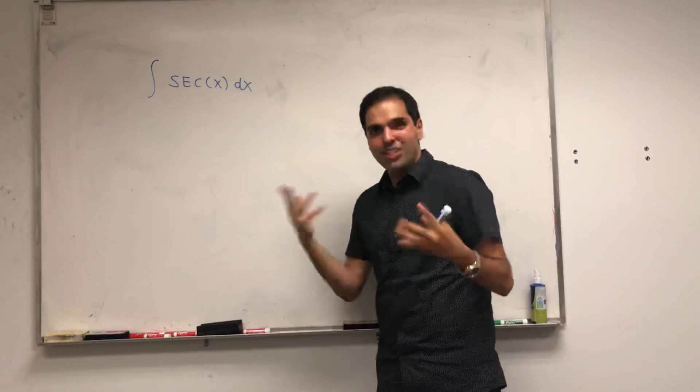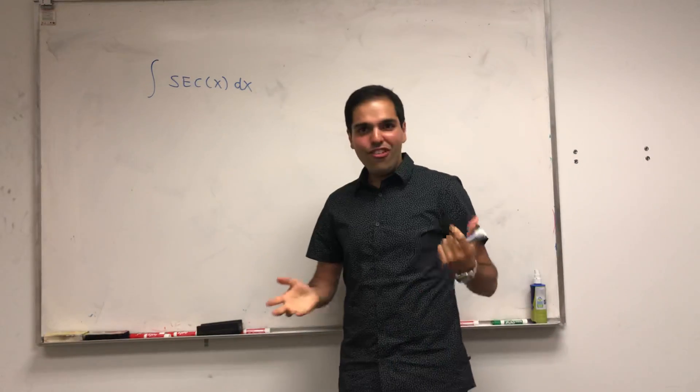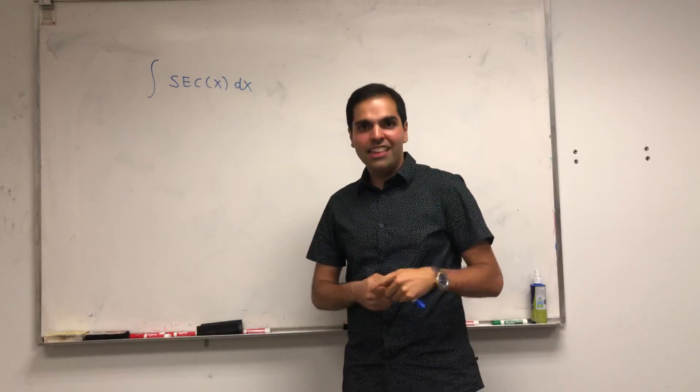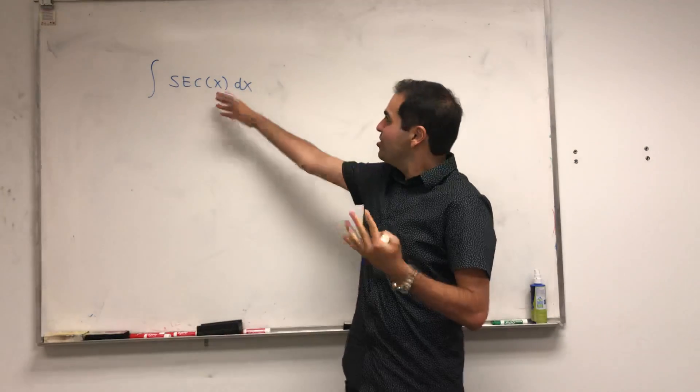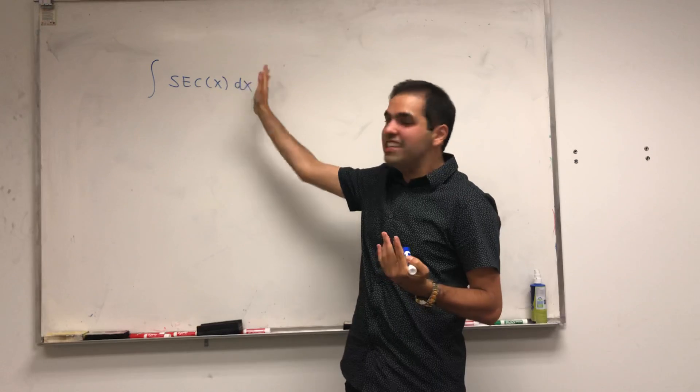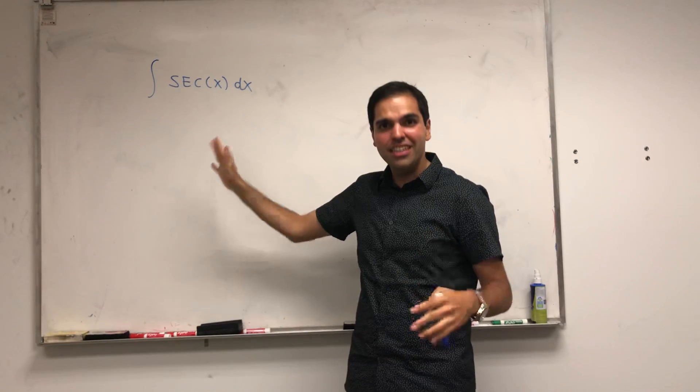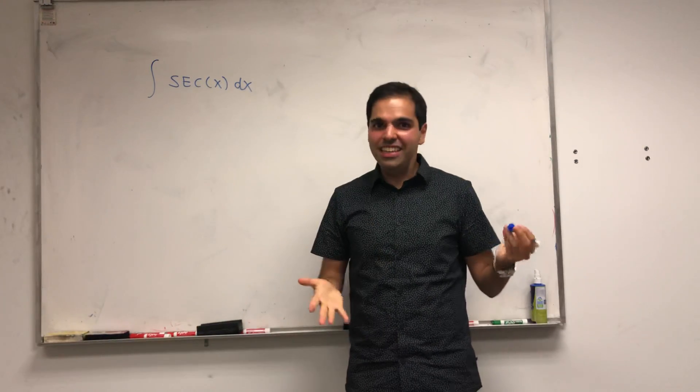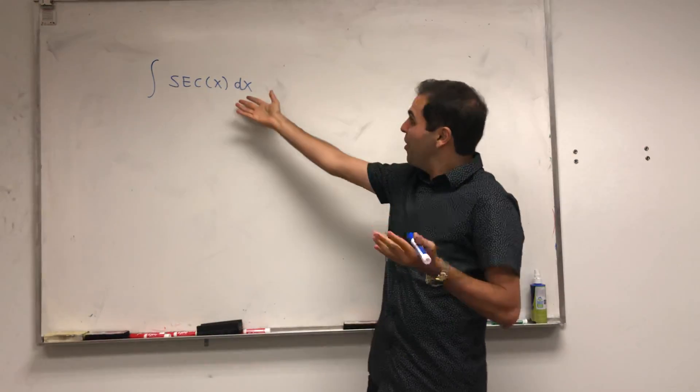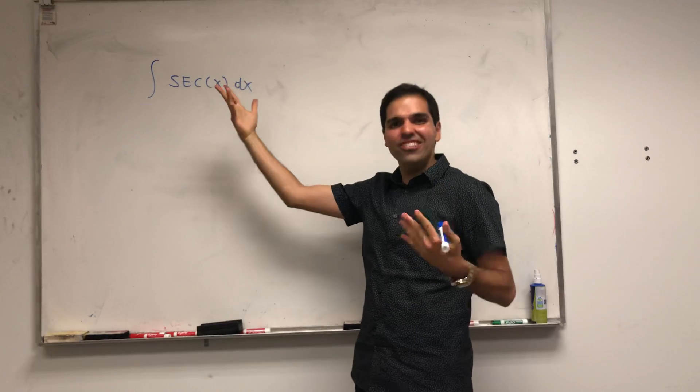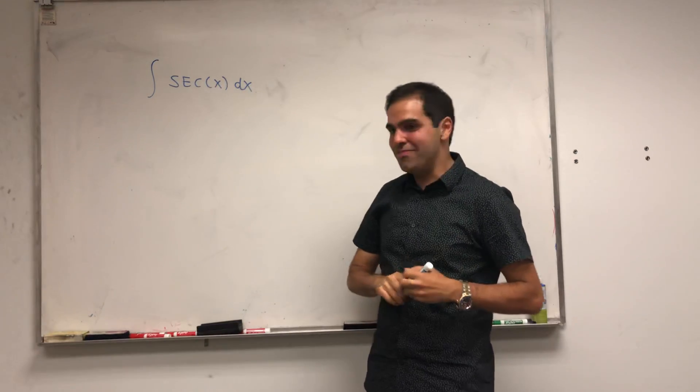What we want to use are two identities. First of all, we know that the integral of secant squared is tangent. So somehow we want to take a secant squared out of it. But also, we know that the integral of secant tangent is secant. So somehow we also want to make a secant tangent up here.